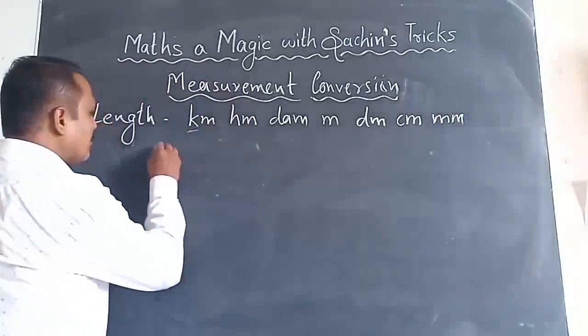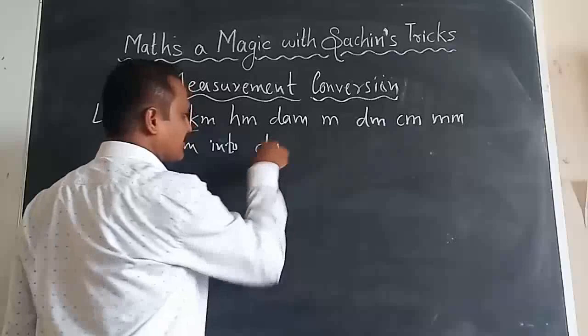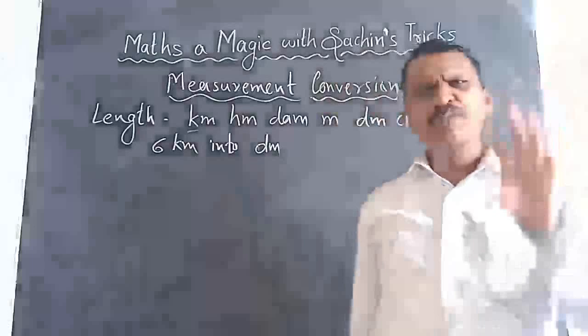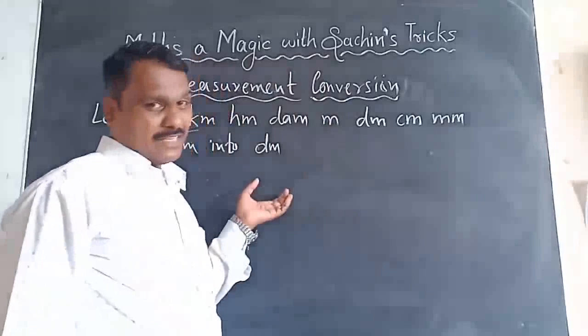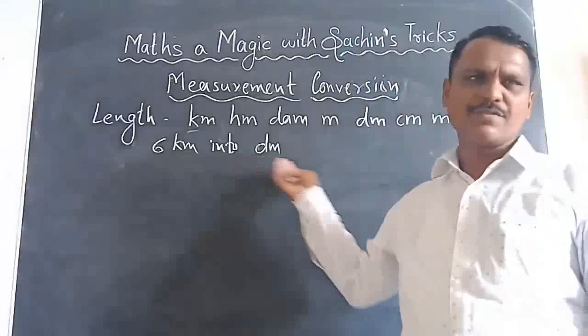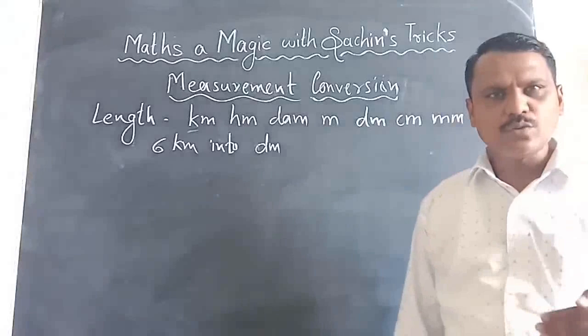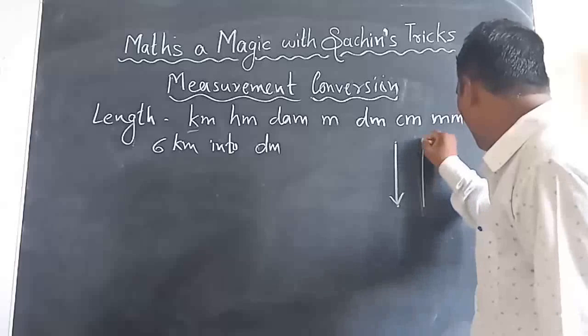First we will go for Length. Suppose I want to convert six kilometers into decimeter. With my trick, you have to ask yourself two questions — whatever question may be given to you. First question: are you converting from a higher to lower unit, or from a lower to higher unit?